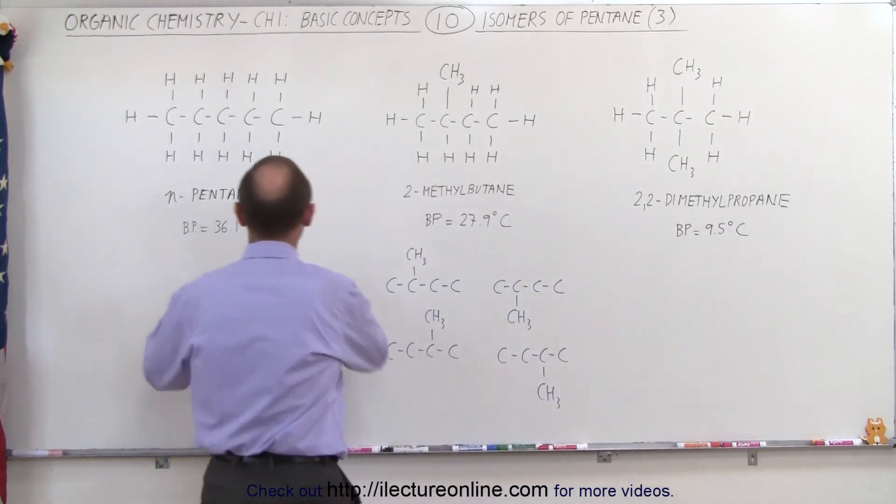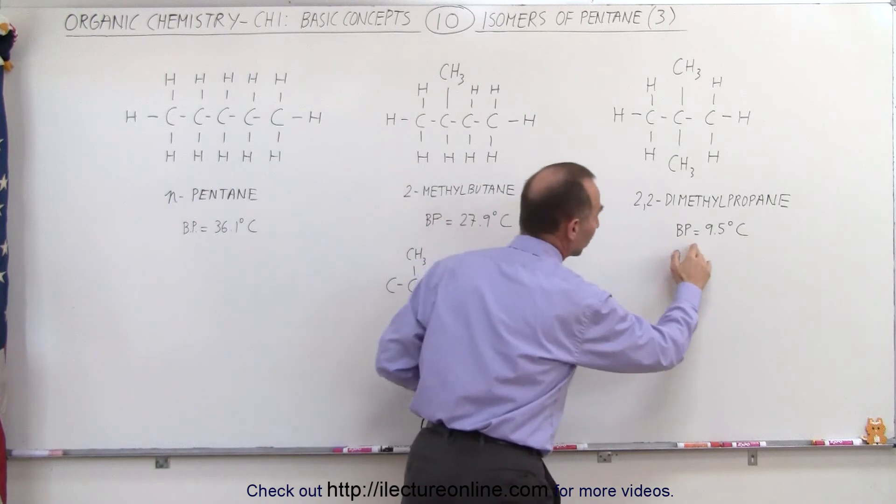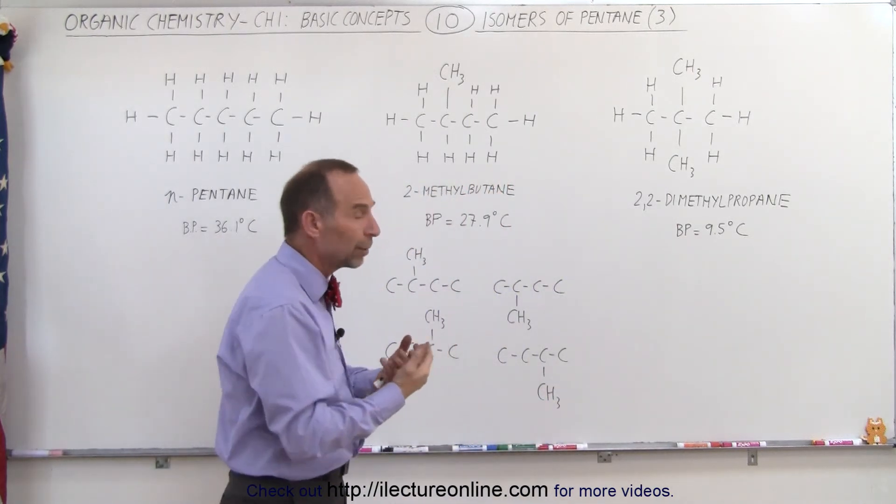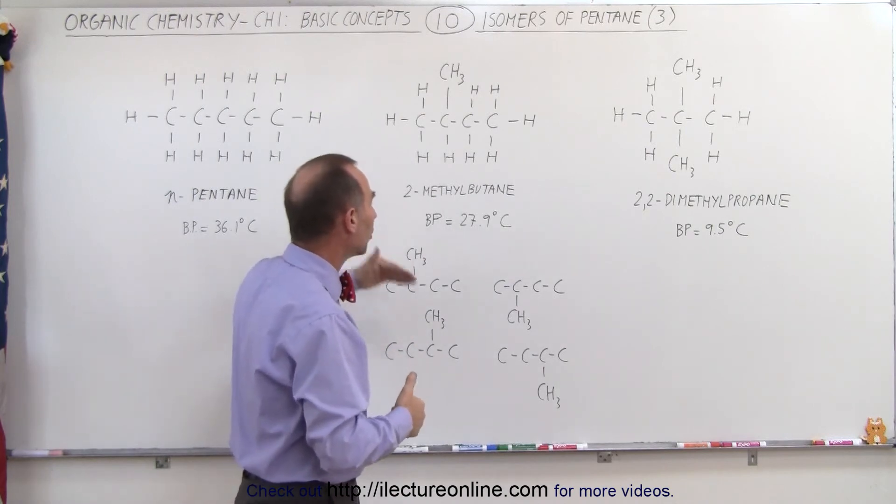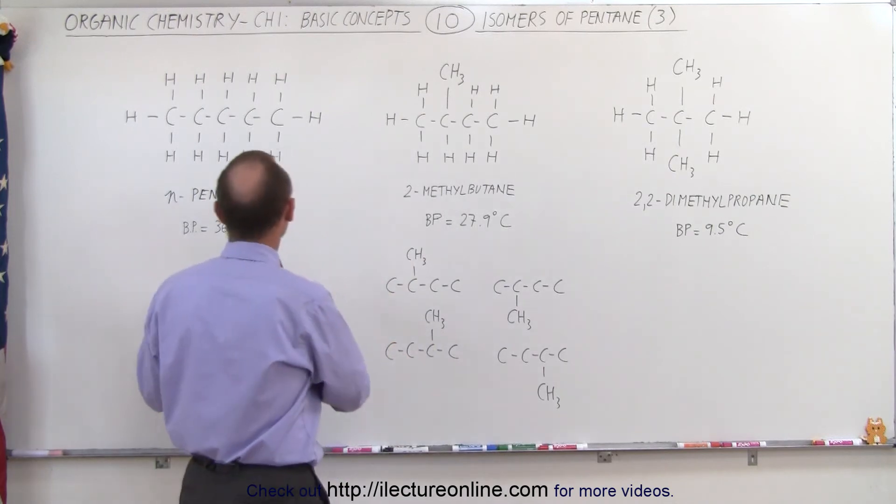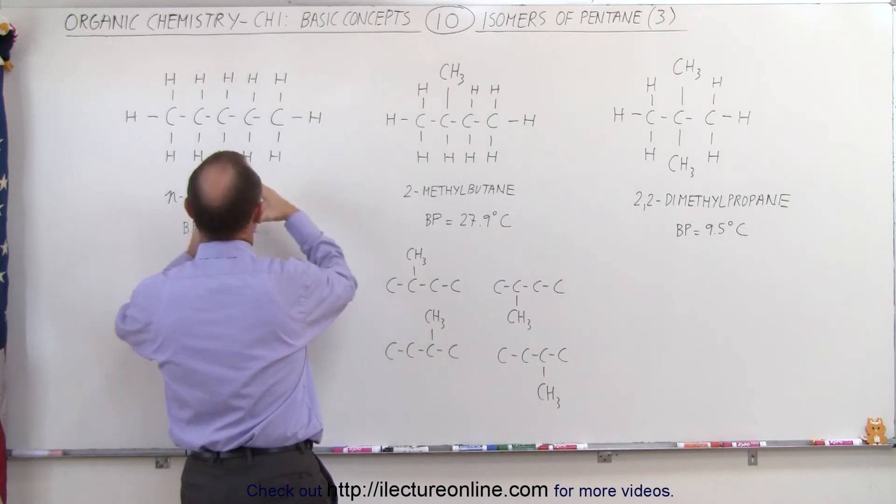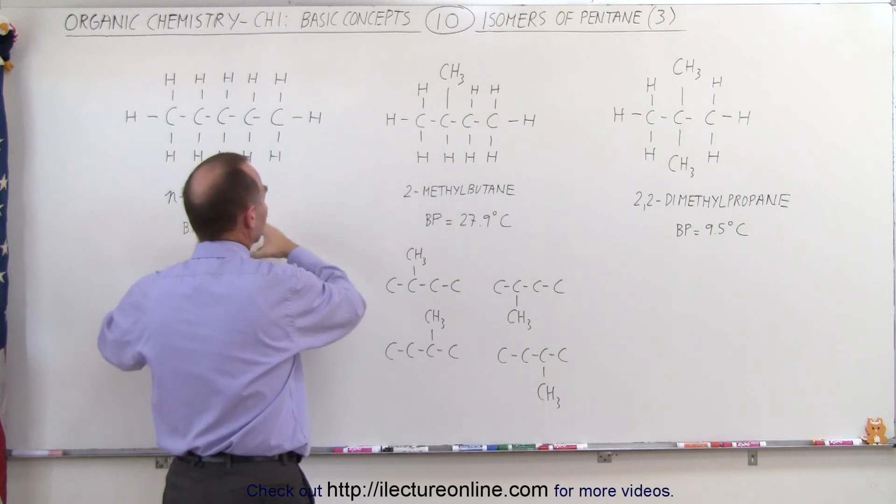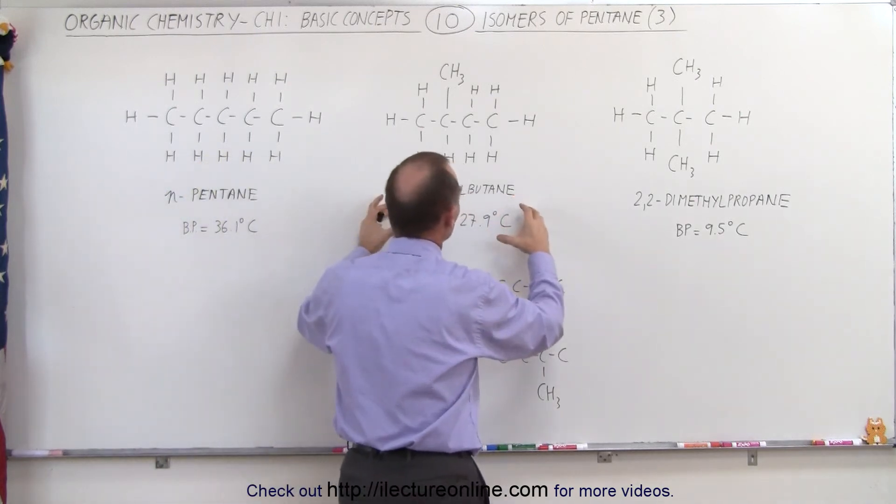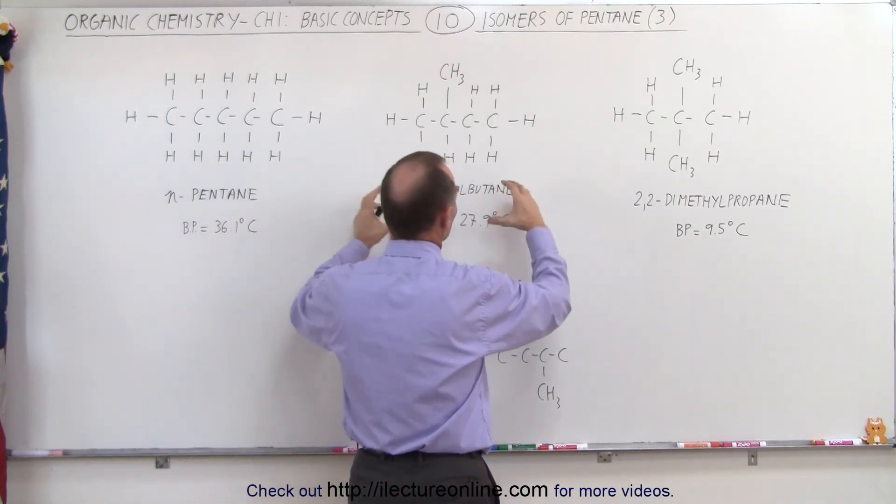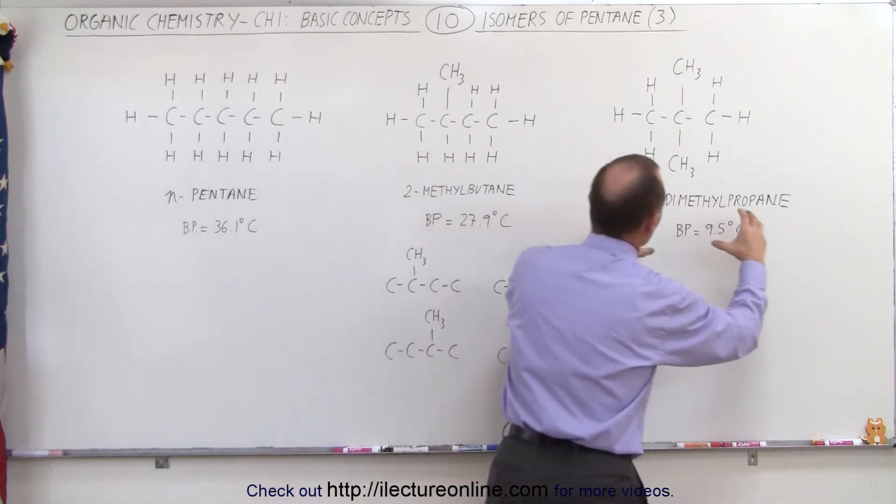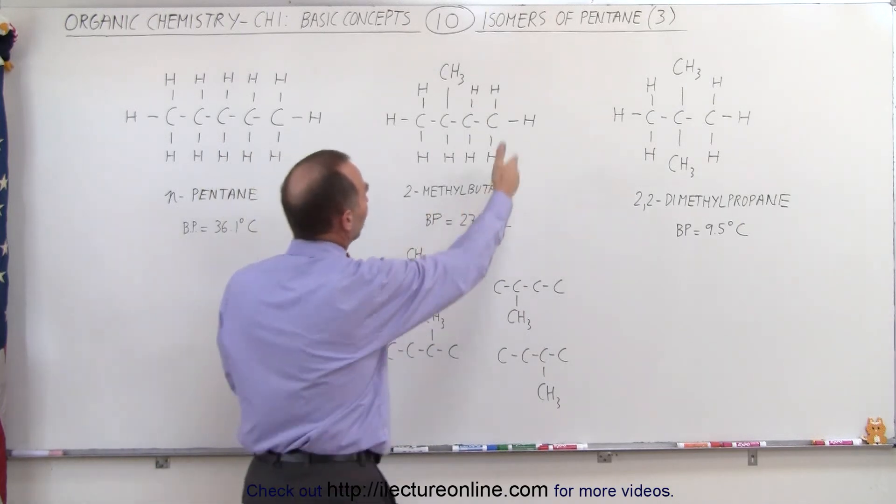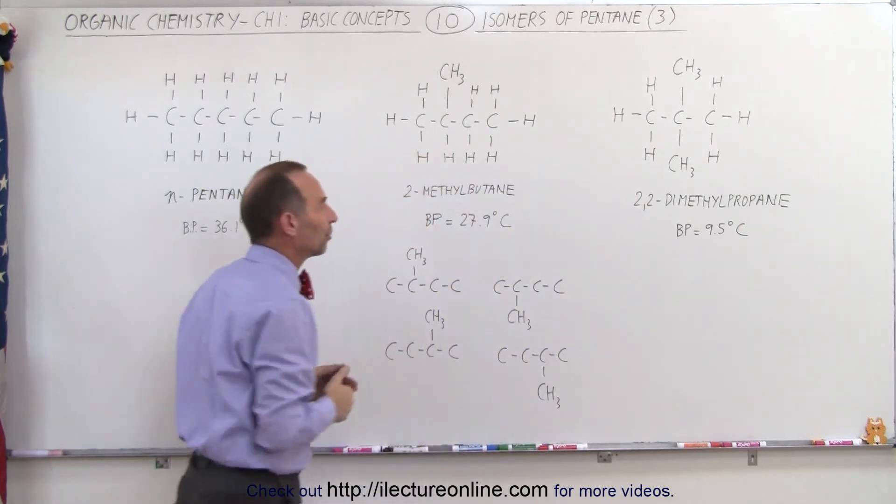Notice that in each case the boiling point becomes lower and lower, which means it becomes more volatile. It'll go to boiling, it'll become into a gaseous state at a lower temperature, which means that these molecules are connected more strongly to one another because of the intermolecular forces than these types of molecules. So you can see that the intermolecular forces diminish as we have these different isomer forms.